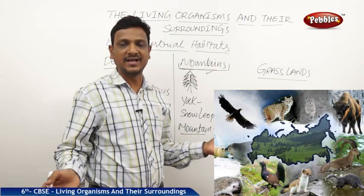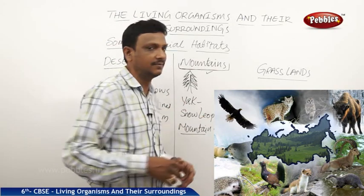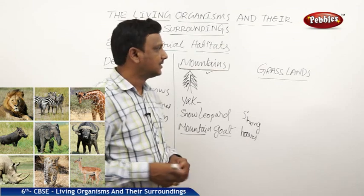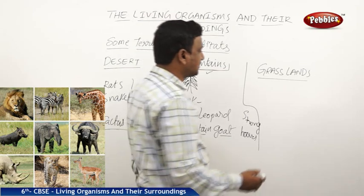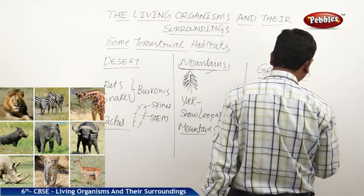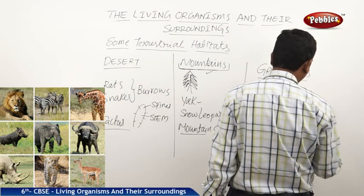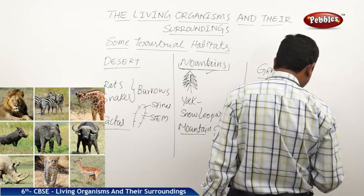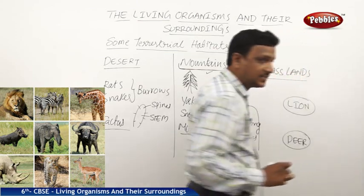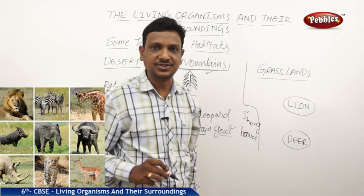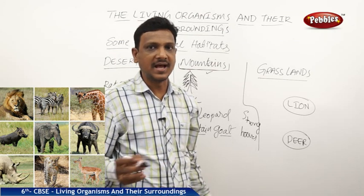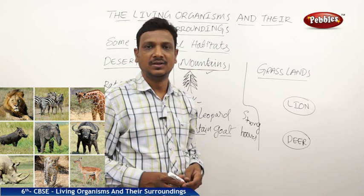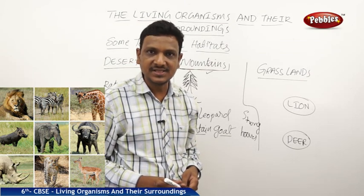There are plenty of plants and animals found in the mountains; only a few are discussed here. Now let us move to the grasslands. When we talk about grasslands, we are talking about two animals: lion and deer. We always like to watch a lion or tiger chasing a deer on the National Geographic channel, where the hunting process goes on — a natural process where a predator chases a prey.